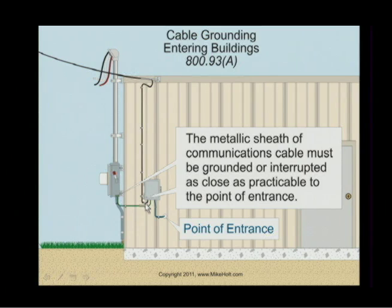Once we get into the next slide, we're going to focus on this bonding conductor because, starting in the 2005 code, an inter-system bonding terminal is required. Now you had millions of buildings built before the inter-system bonding terminal — 250-94 — and whenever you had to make connections there, you had to try to find an electrode or a grounding electrode conductor and go that direction.